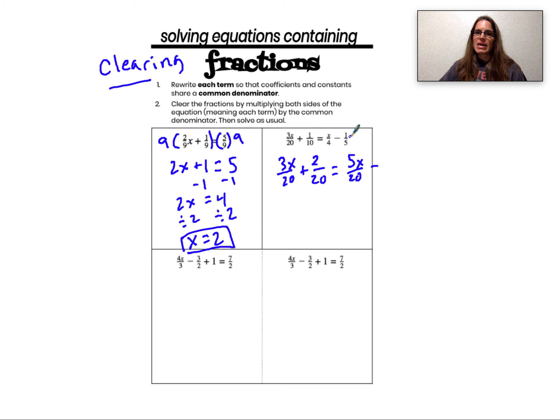Last term, minus 1 fifth. What do I need to multiply the top and the bottom by to have a denominator of 20? Yep, 4. So multiplying the numerator and the denominator by 4 gives me 4 twentieths.